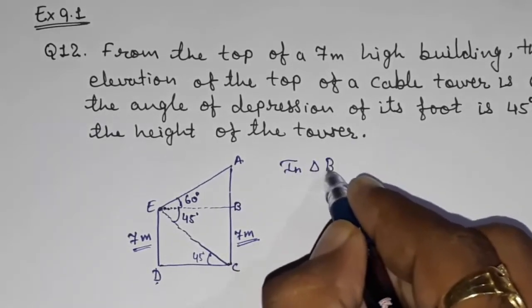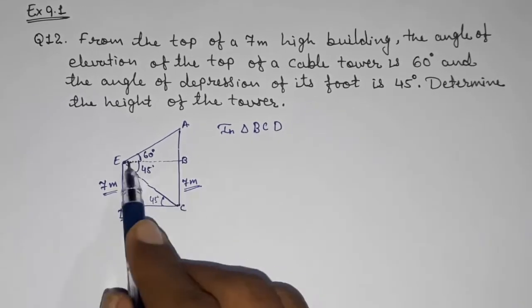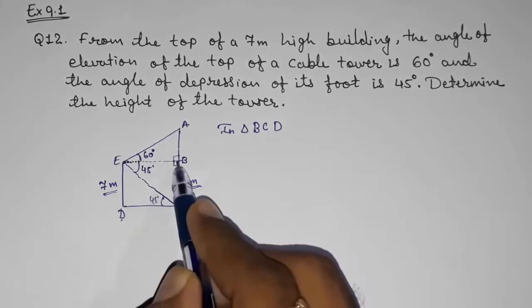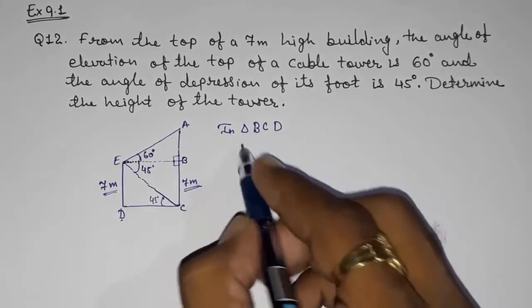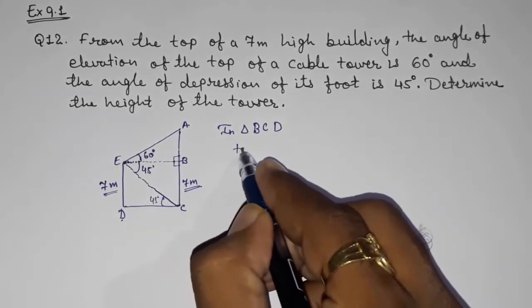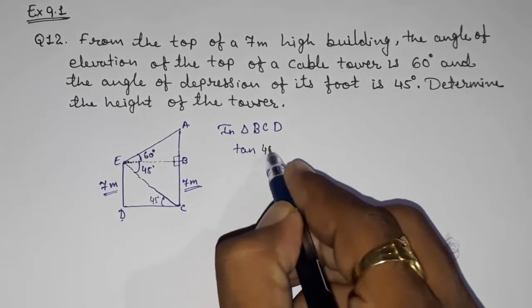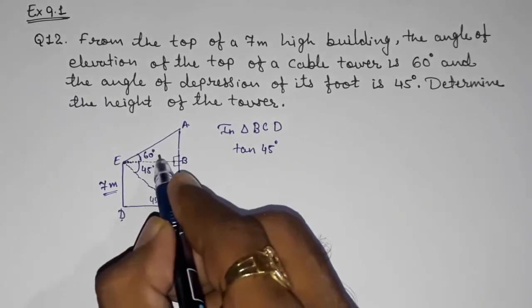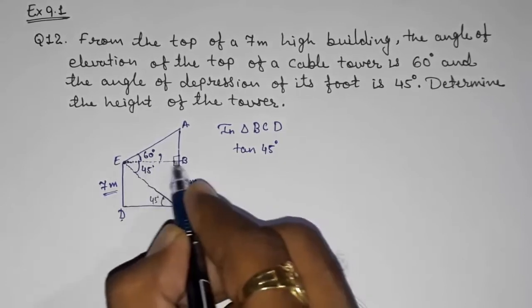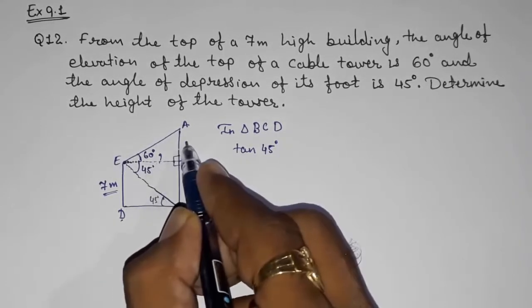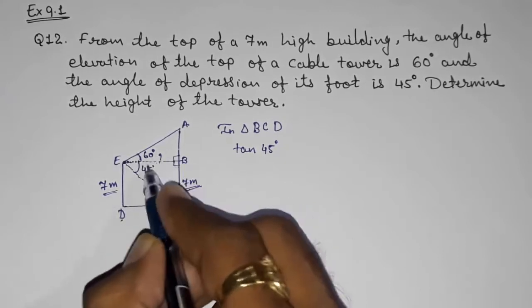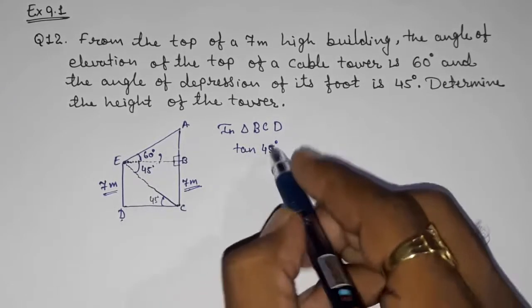In triangle BCD, means in this triangle, we know this is 90 only because these two are parallel. So now in BCD we are getting tan 45. Why tan 45? This is our opposite that they had given to us, and they had told us to find out this. Now with the help of this we are going to find out this. That's why they had not told us to find out BC, but we are in need of BC, so we have to find out that.